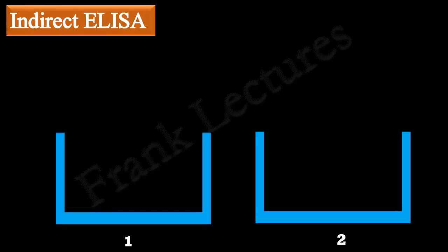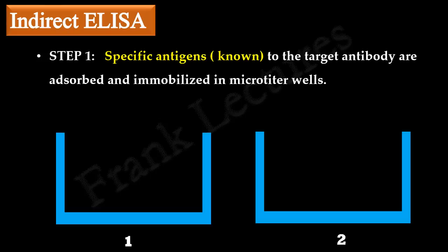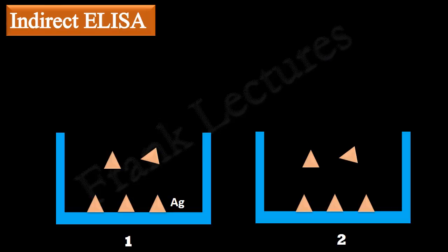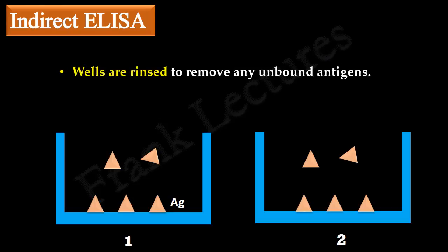We will take two microtiter wells. In the first step, specific antigens to the antibodies of interest are immobilized in both the microtiter wells. These antigens are known to us. For example, if we want to detect antibodies for HIV, the antigens absorbed in microtiter wells are recombinant envelope and core proteins of HIV. After some time, these wells are rinsed to remove any unbound antigen.